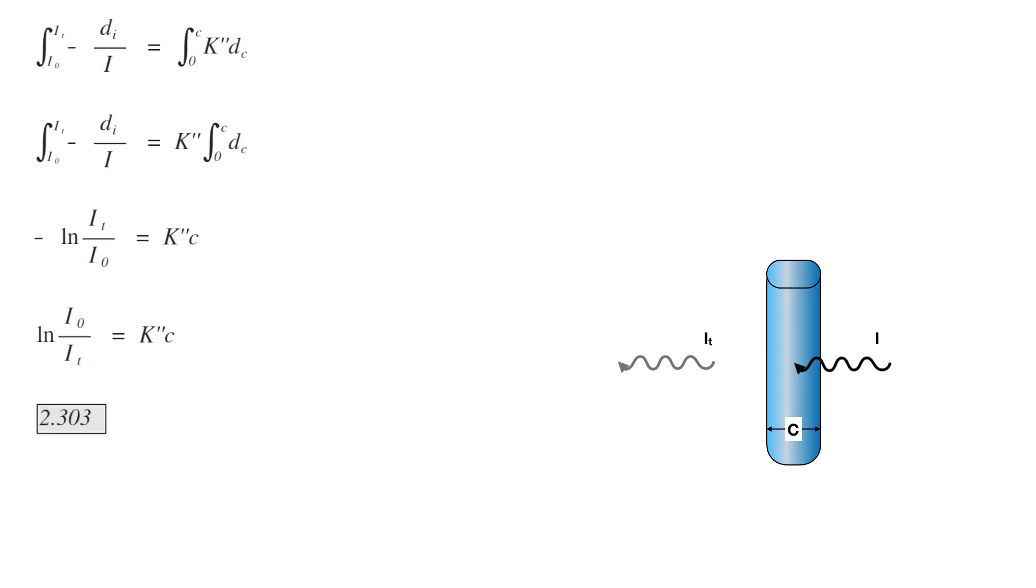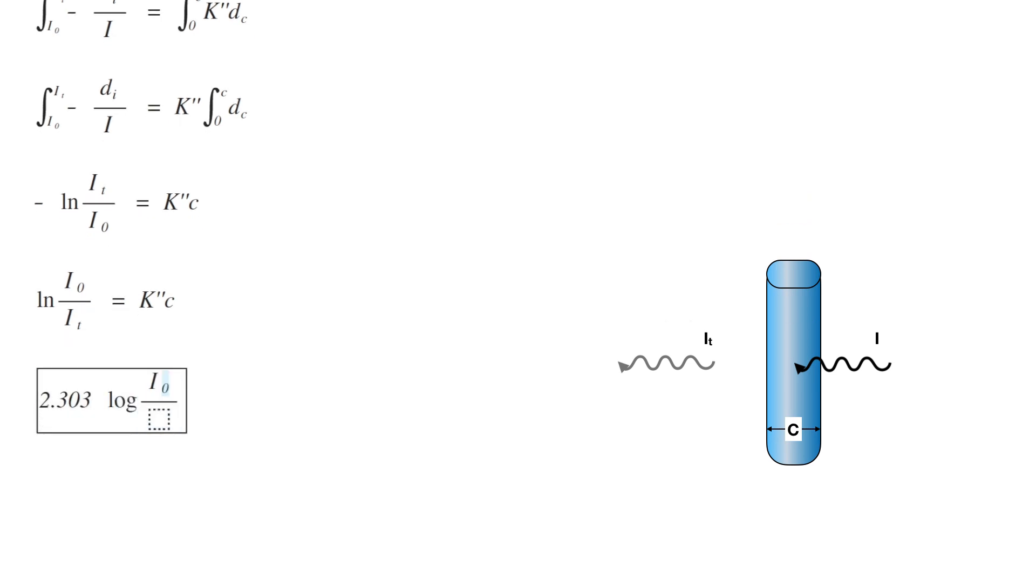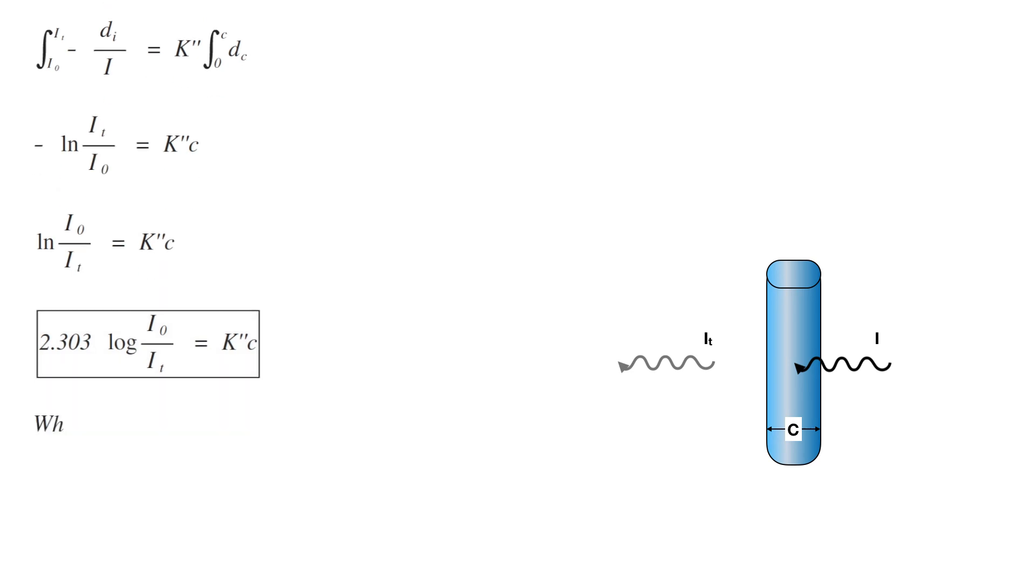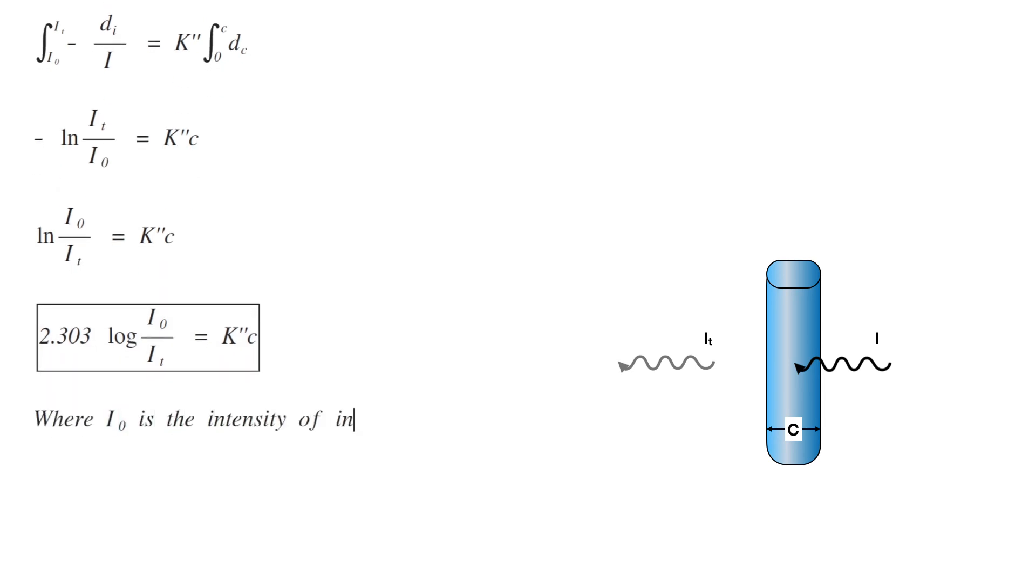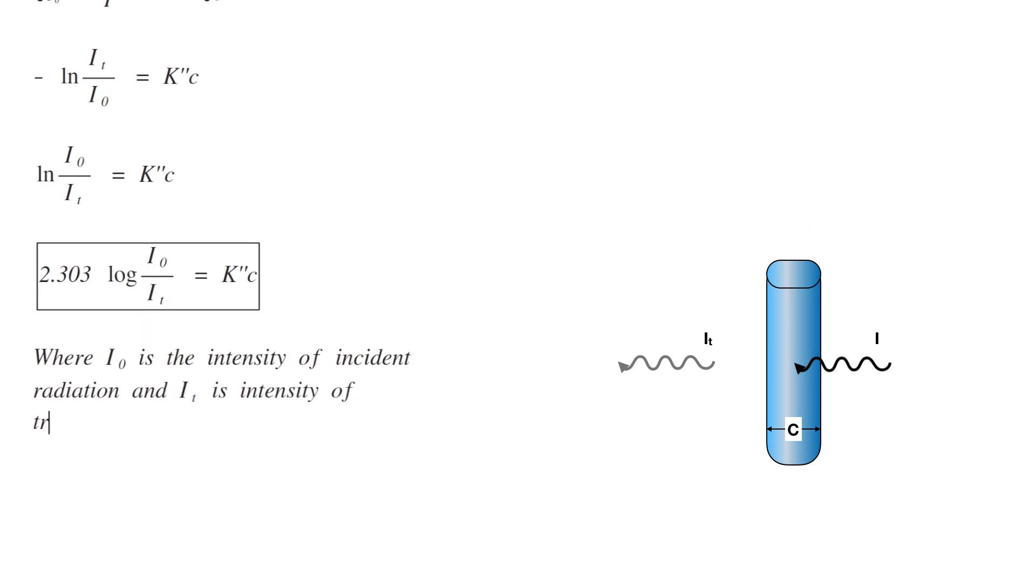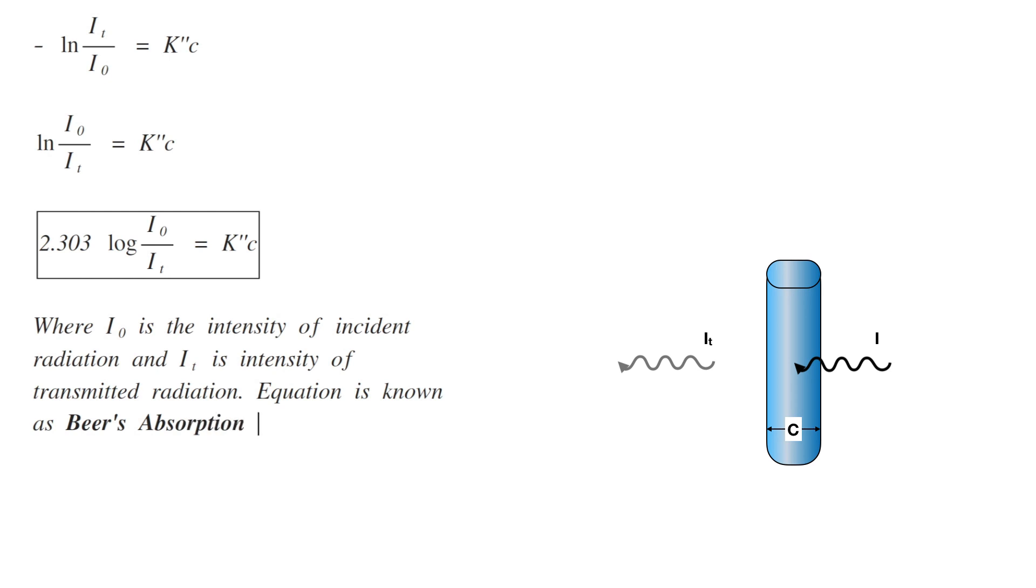This can be converted into log base 10 by multiplying with 2.303. Therefore, 2.303 log of I0 by IT equals K double dash C. Where I0 is the intensity of incident radiation and IT is intensity of transmitted radiation. This equation is known as Beer's absorption equation.